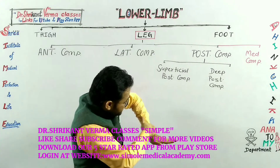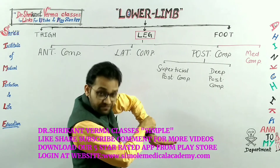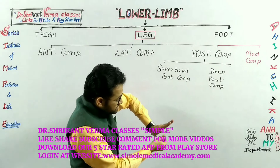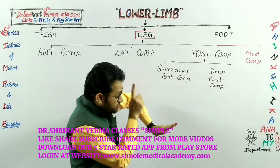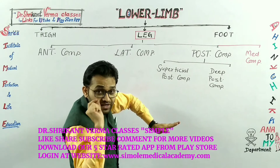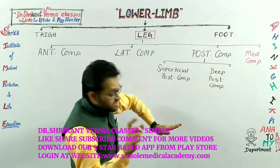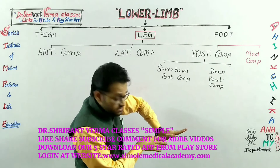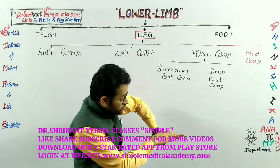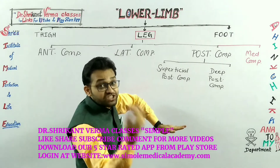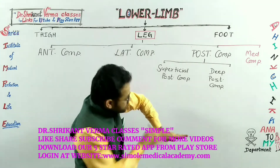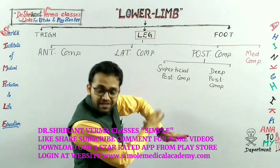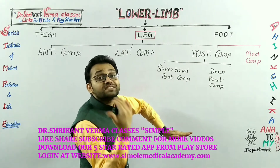If the muscles of the anterior compartment contract, the foot will go in this manner. This is the decrease in the angle of the dorsum side. According to the definition of general anatomy, a decrease in the angle is known as flexion. So this movement is known as dorsiflexion, which is also known as extension. That is why all the muscles of the anterior compartment are also known as extensor muscles, and the anterior compartment is also known as the extensor compartment.